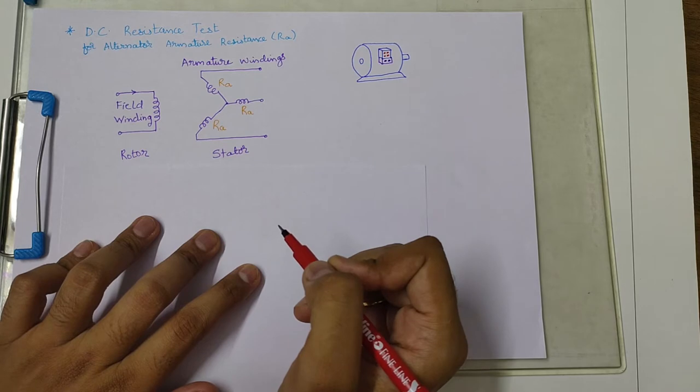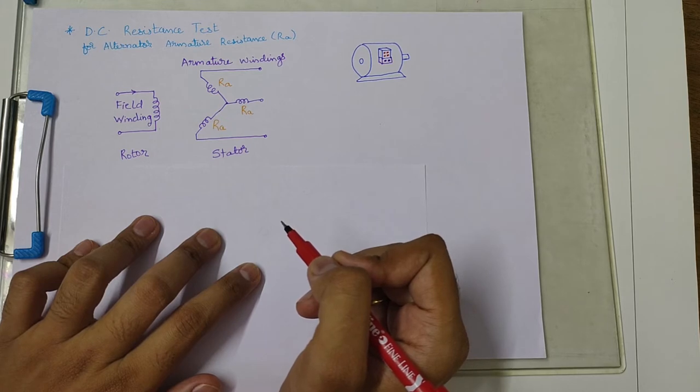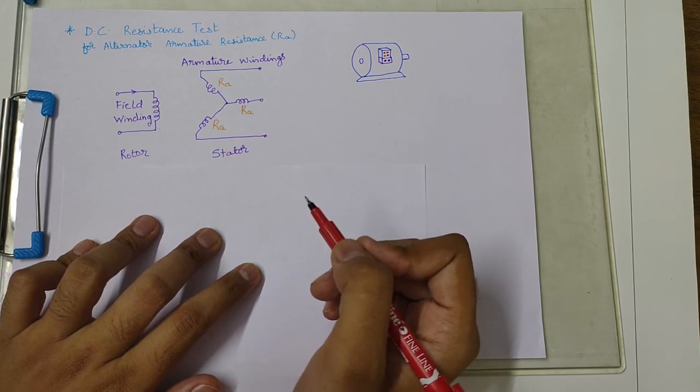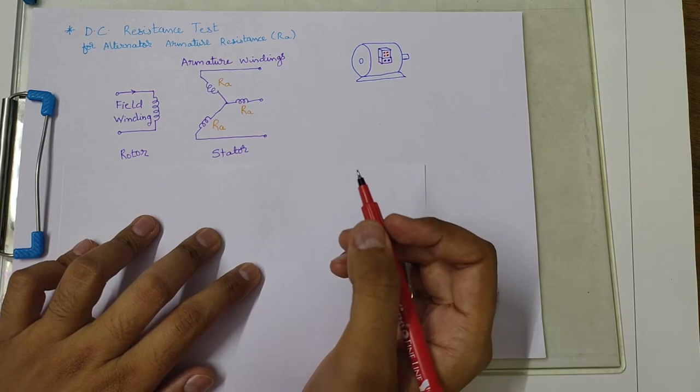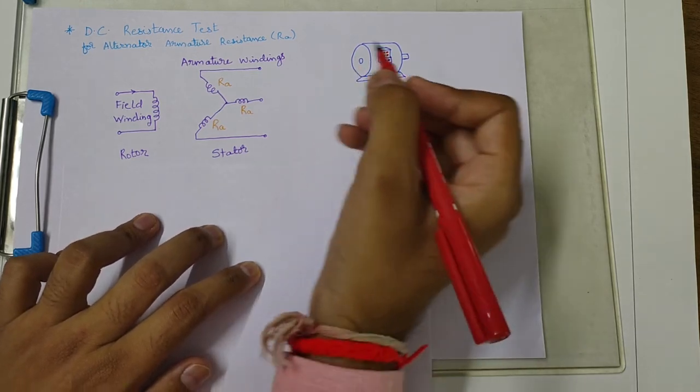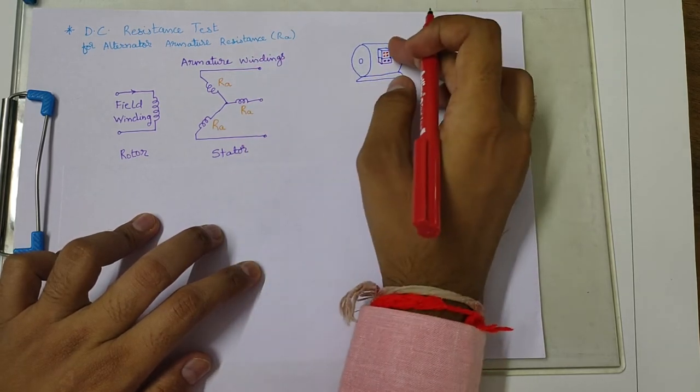Now what do we do? We keep the field windings open and the resistance of alternator per phase is measured by ammeter and voltmeter. The alternator should be at rest.